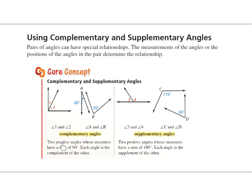Complementary angles are two positive angles whose measures have a sum of 90 degrees — each angle is the complement of the other. Here are some examples: angle one and angle two together equal 90 degrees. We can also have two angles that are separate from each other, not sharing the same side, but they're still complements. Whether angles share the same side or not, complementary angles have a sum of 90 degrees.